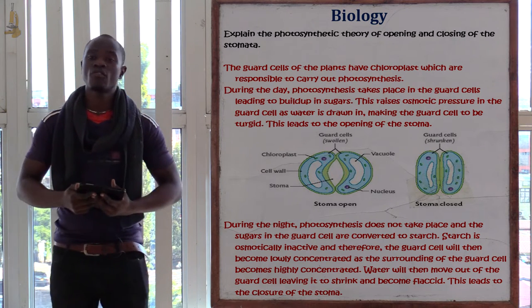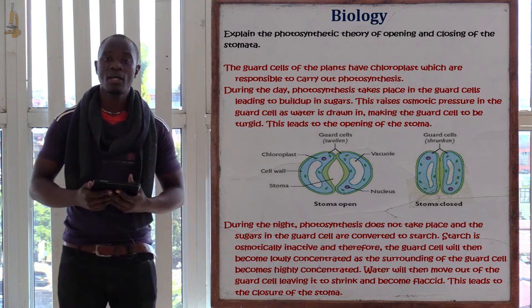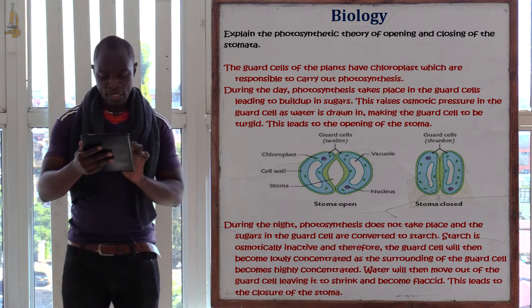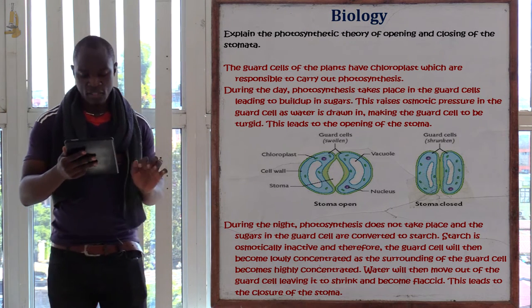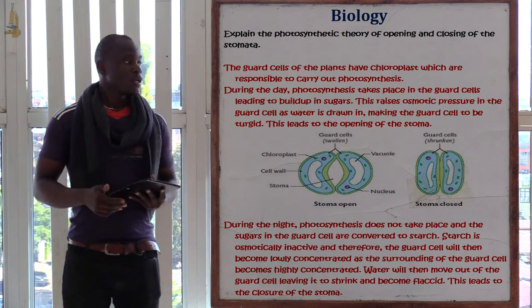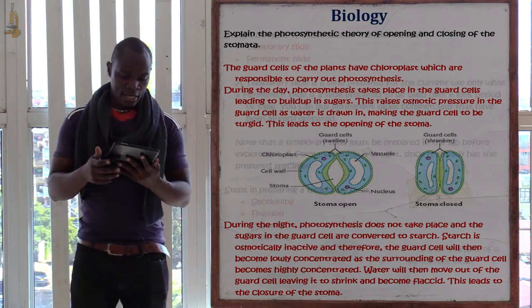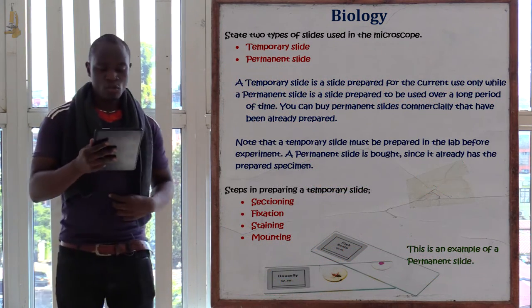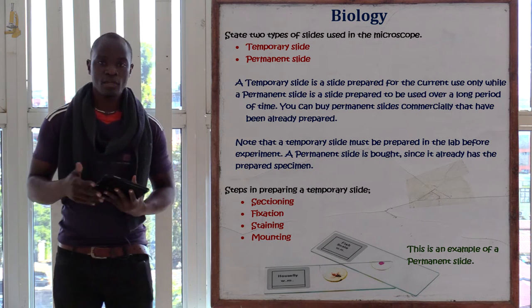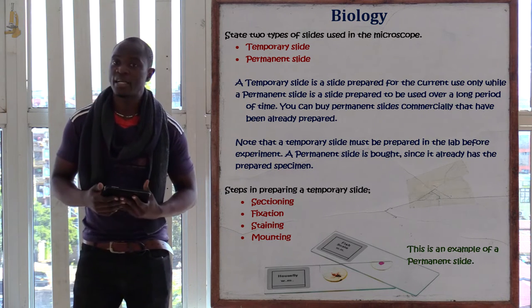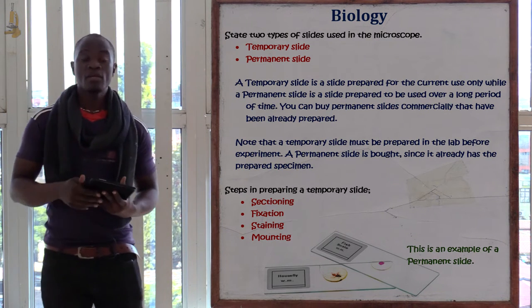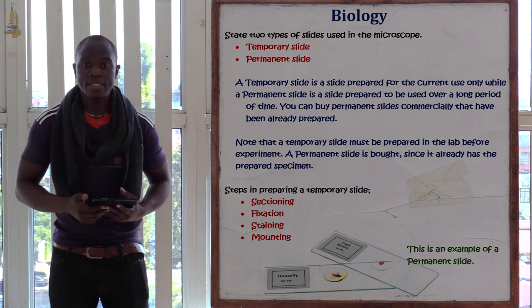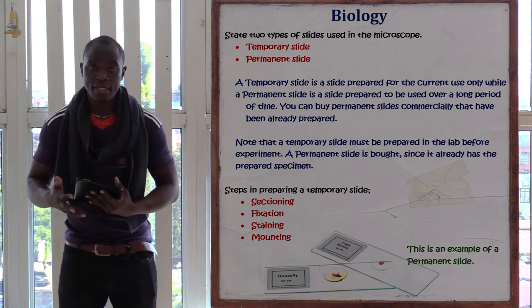We have other theories of opening and closing of the stomata — we also have the potassium ion theory. The next question asks: state the two types of slides used in the microscope. We have the temporary slide and the permanent slide.